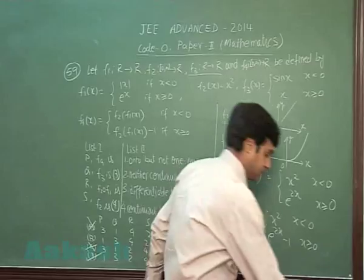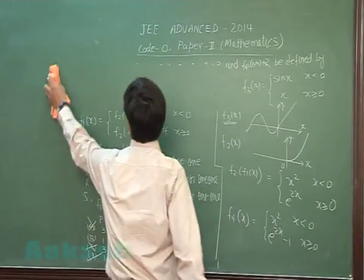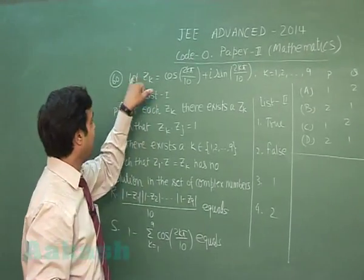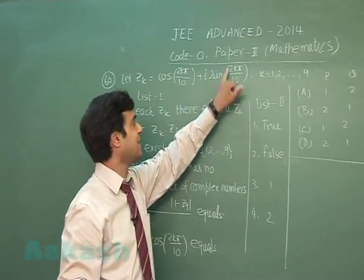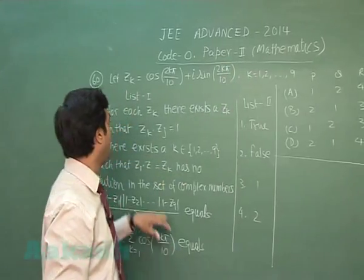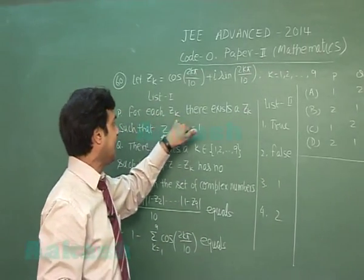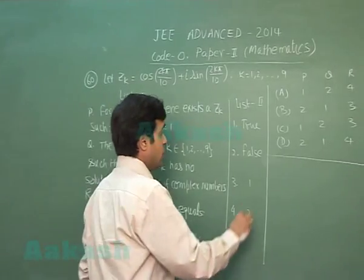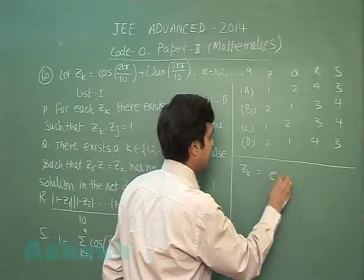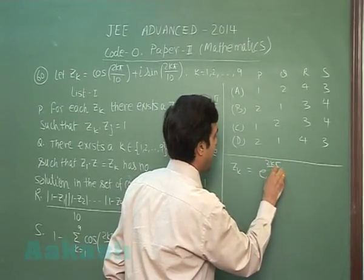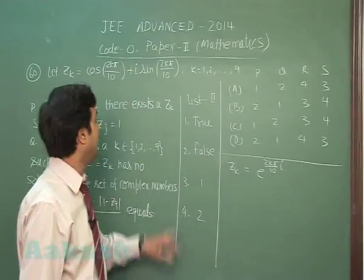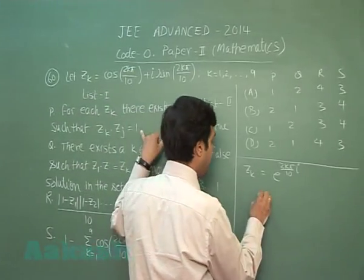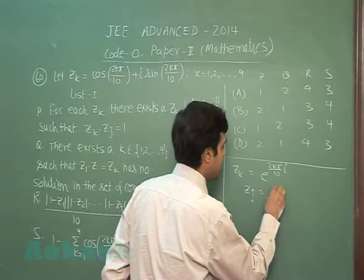Let's move to the next one. Okay, let's go for question number 60, the last of this paper. Let zk equals cos(2k pi by 10) plus iota sin(2k pi by 10), where k is from 1 to 9. There are four parts given. For each zk there exists a zj such that zk into zj is 1. So given to me zk equals e raised to the power 2k pi by 10 iota. We can write in the Euler form to this number.